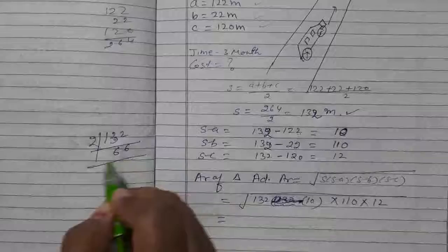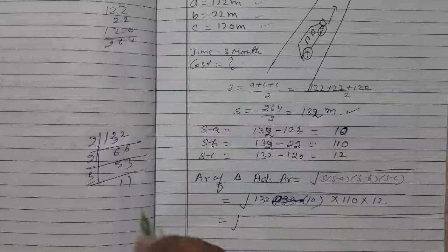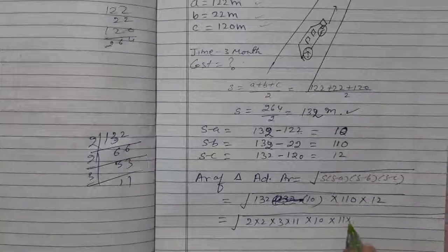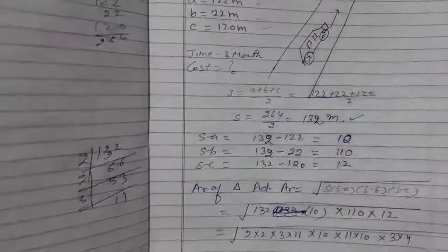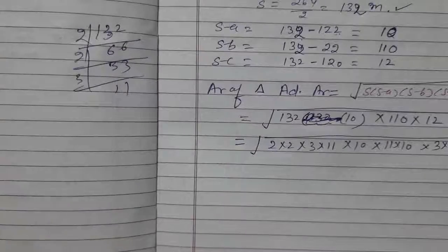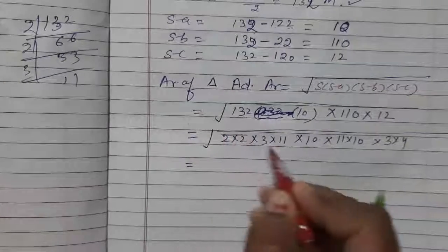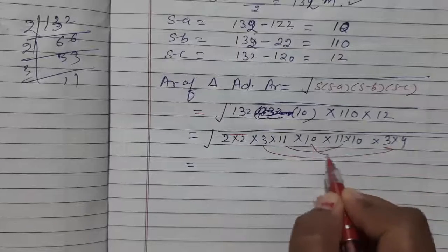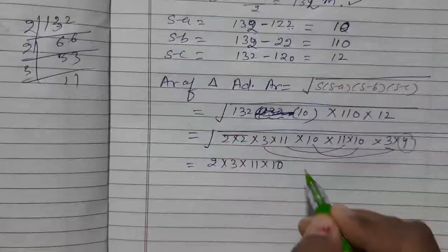Now, factorization of 132 is 2 into 2 into 3 into 11. And this 10 will be 2 into 5. 110 is 11 into 10. And 12 is 3 into 4. Now we will simplify it. We will make the pairs: 2 into 3 into 11 into 10 into 2. So 66 into 20.